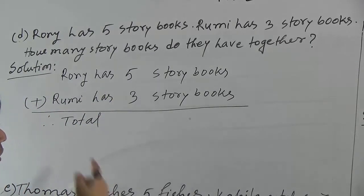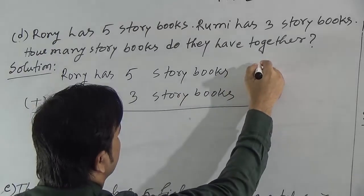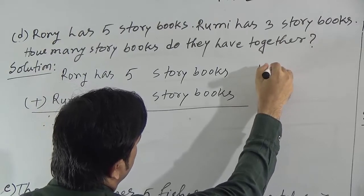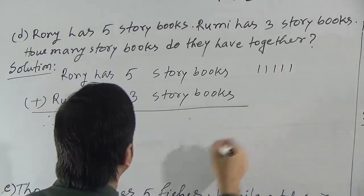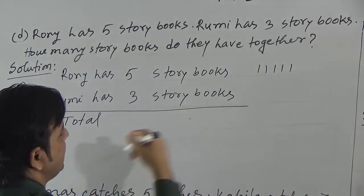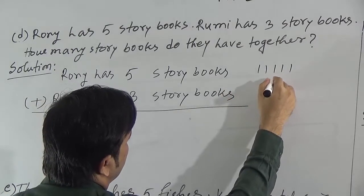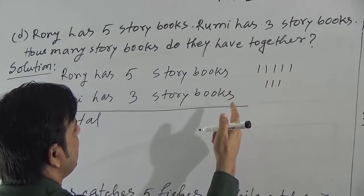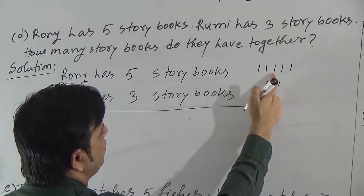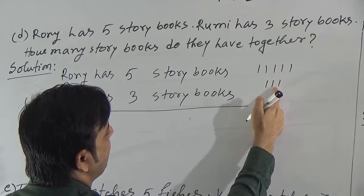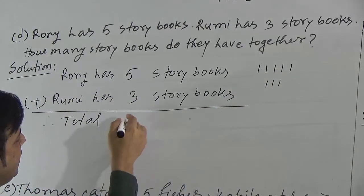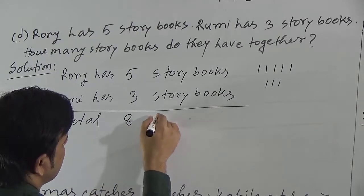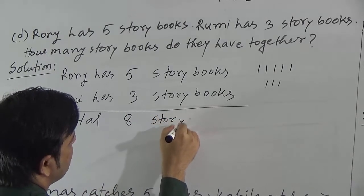Ronnie has 5 storybooks — I am showing 5 sticks here: 1, 2, 3, 4, 5. Then Rumi has 3 storybooks: 1, 2, 3. Now count them all together: 1, 2, 3, 4, 5, 6, 7, 8. So if we add 5 and 3, the total will be 8 storybooks.